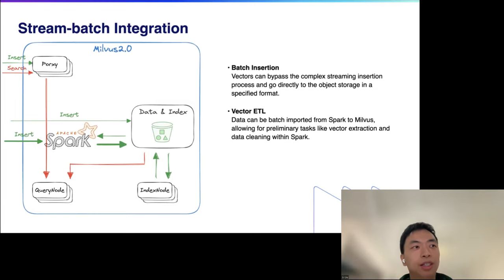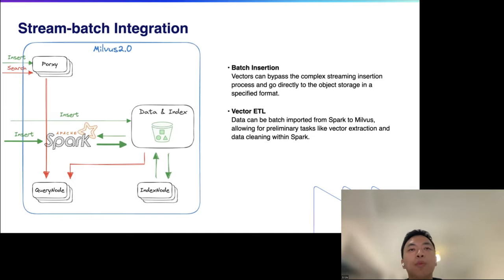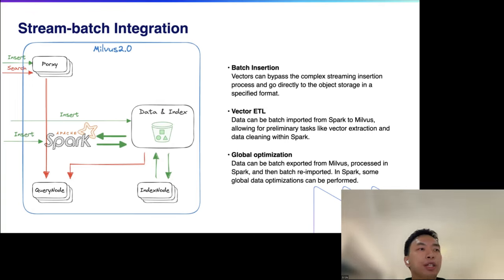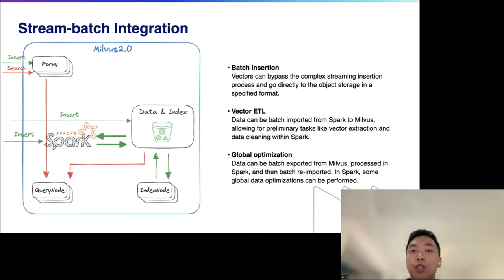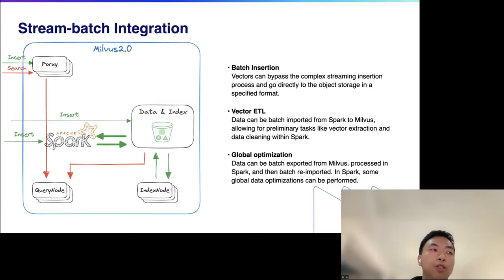The second pathway is via Spark — data can be imported into Milvus through Spark, where users can define data preprocessing tasks such as embedding extraction from unstructured data and data filtering. The third pathway allows data to be batch-exported from Milvus to Spark for processing and then reimported back. We can perform optimization based on the global distribution of data — for example, periodically exporting all vectors, performing global IVF indexing in Spark to make each segment a bucket, then reimporting so that during search we can skip most segments based on their distance from the query point.